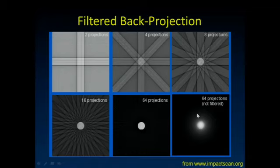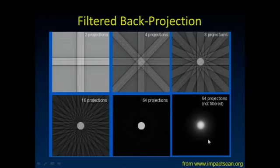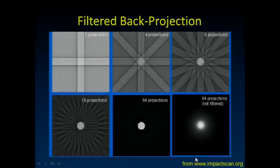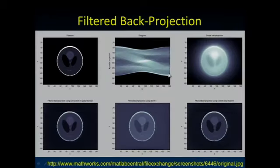Compare the filtered back projection to the simple back projected object—that's what I want you to understand conceptually. The data that the CT scan acquires are the projections. We mathematically apply filtering to them and then do the back projection, giving us our reconstruction. Here's the Shepp-Logan phantom, here are those projections—something called the sinogram—and here's the simple back projected object and the filtered back projection version.